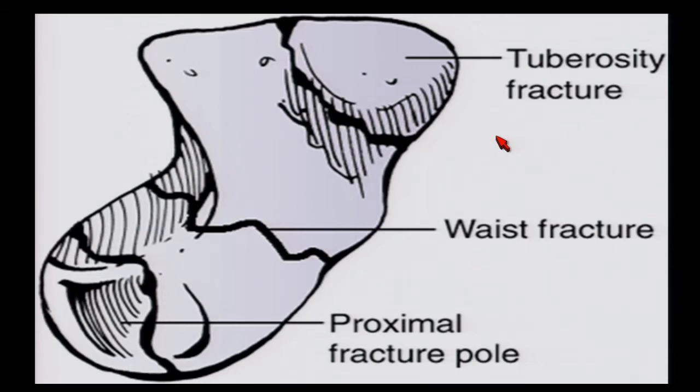There's some tubercle fractures, and they're often smaller than that. And there's proximal pole fractures. And trying to figure out the line between proximal pole and waist sometimes is not easy. We're working on that as well.